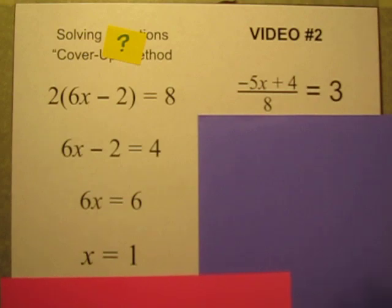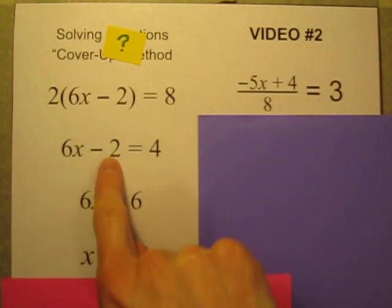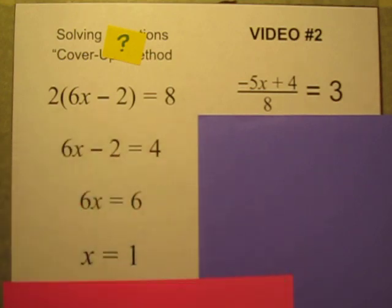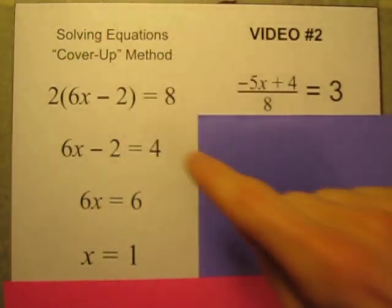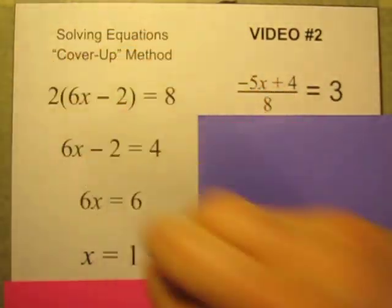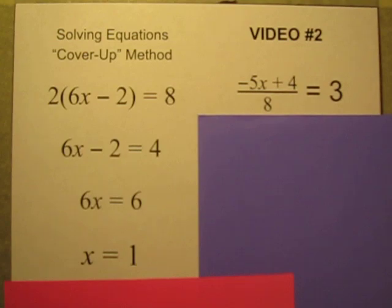Rather than memorizing rules like, well I'm subtracting here so I have to add two to both sides, or I'm multiplying here so I have to divide by the same number on both sides, and memorizing rules and steps that don't really make sense. If you just think of this equation in chunks, it makes a lot of sense.